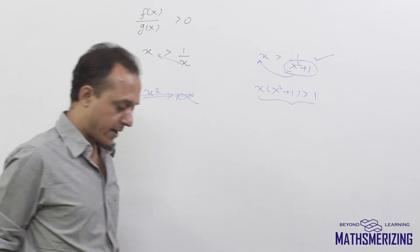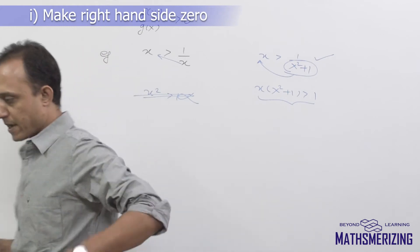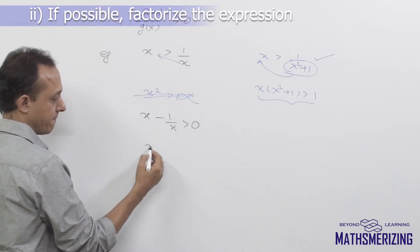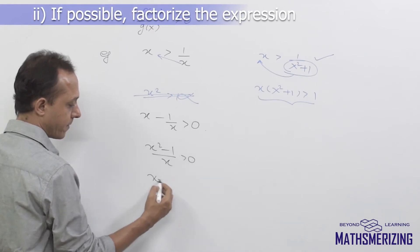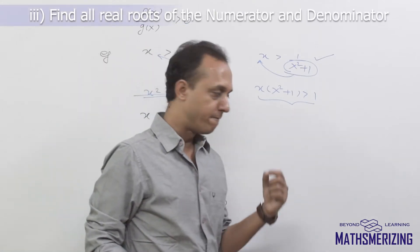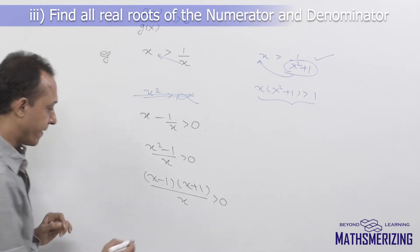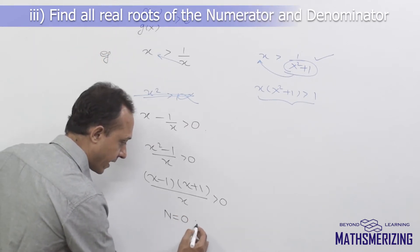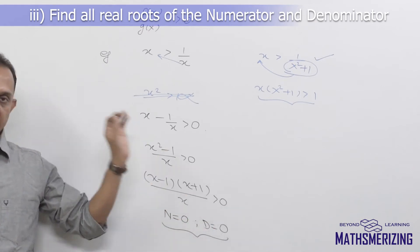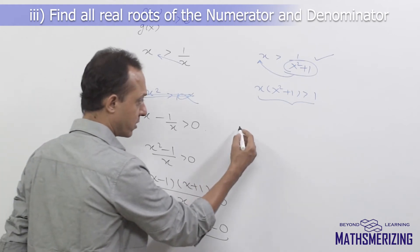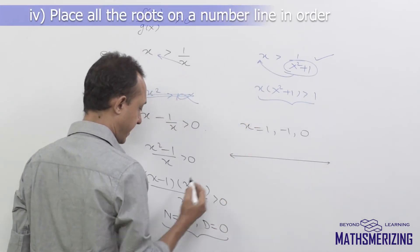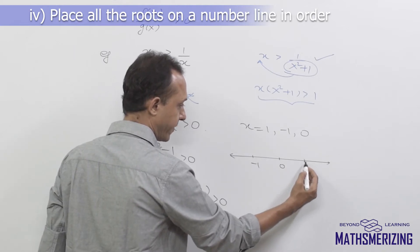To solve such questions there are 5 steps. Step 1: make the right hand side 0 — so we write x minus 1 upon x is greater than 0. Step 2: factorize — x squared minus 1 upon x is greater than 0, giving (x minus 1)(x plus 1) upon x is greater than 0. Step 3: find roots of both the numerator and the denominator and place them on a number line. The roots are x = 1, x = -1, and x = 0.